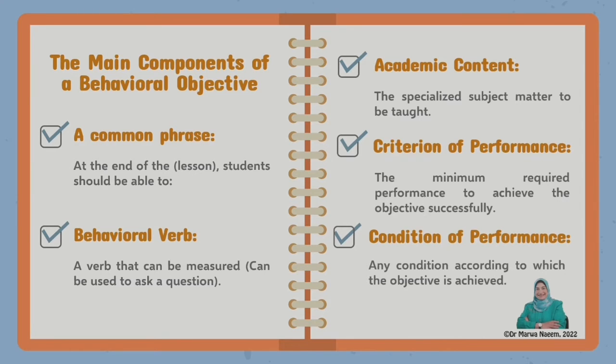So these are the five main components of a behavioral objective. Some educators claim that we can write an ideal objective using the first three components and leaving criterion and condition of performances, but if you want to write a perfect behavioral objective, you have to include these five components.